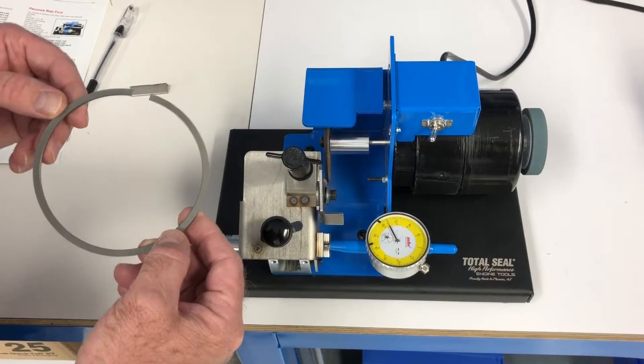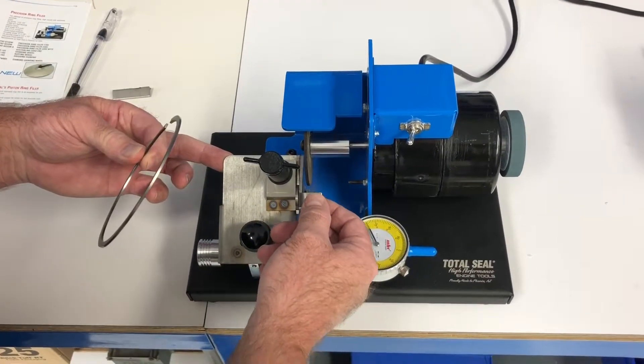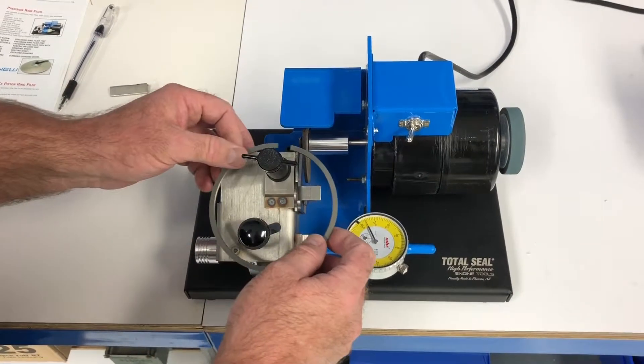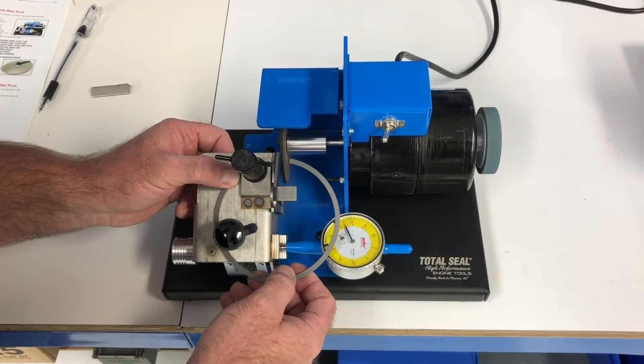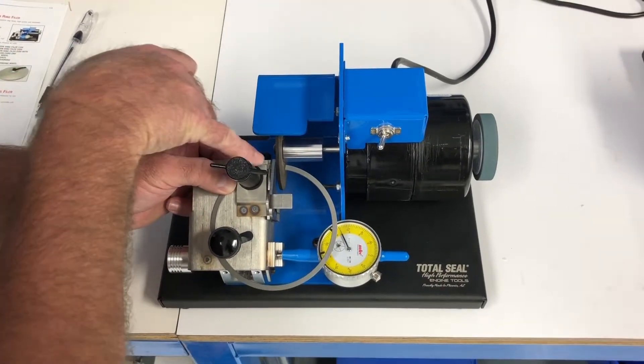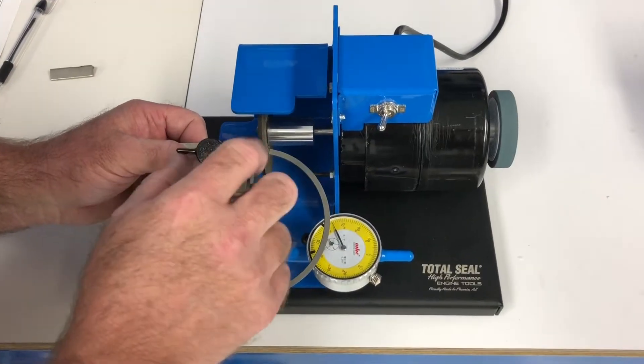Okay, now I'm going to show you the process of filing a piston ring. First thing you do, rotate the ring squaring stop down. You're going to take your ring and you're going to bring it up flush with the stop. You're going to lock the screw down here.